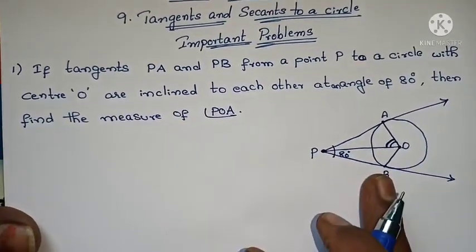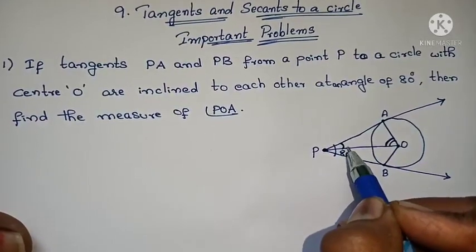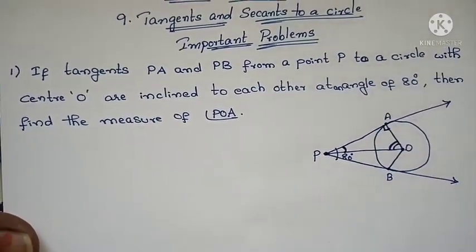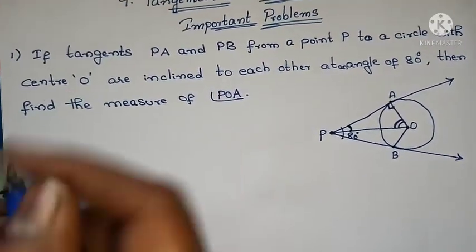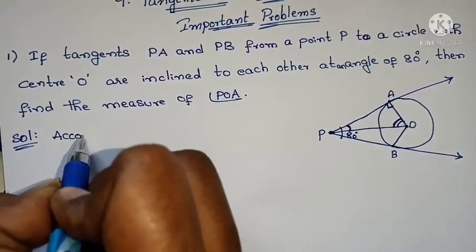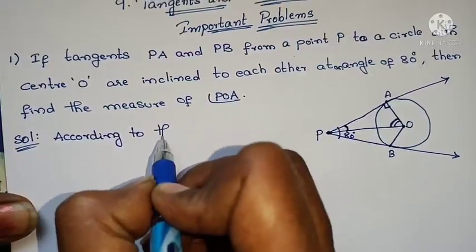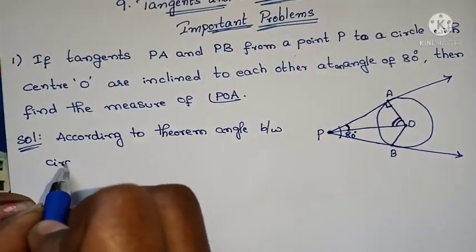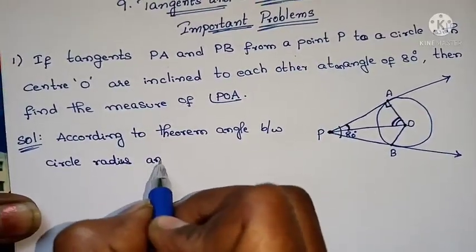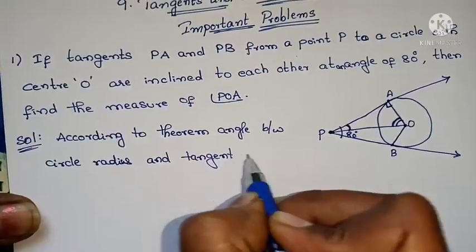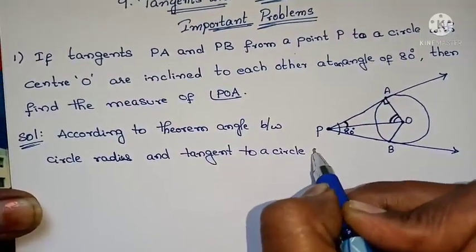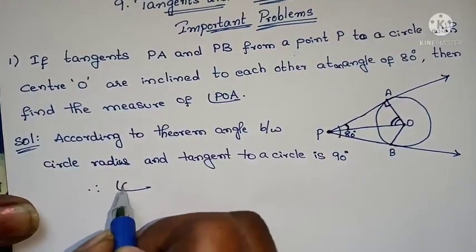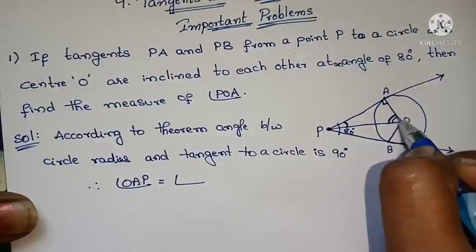To find this angle, we already know that the angle between a radius and tangent to a circle is 90 degrees. According to the theorem, the angle between the radius and tangent to a circle is 90 degrees. Therefore, angle OAP equals 90 degrees.